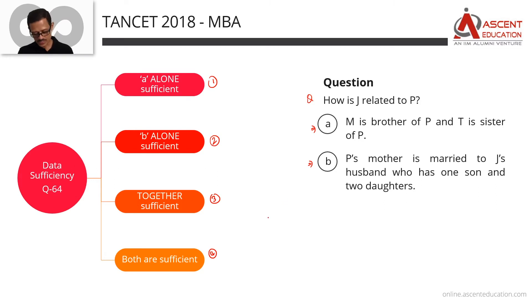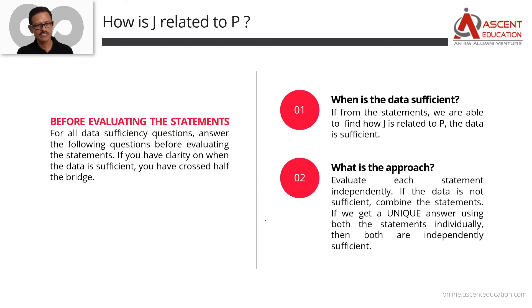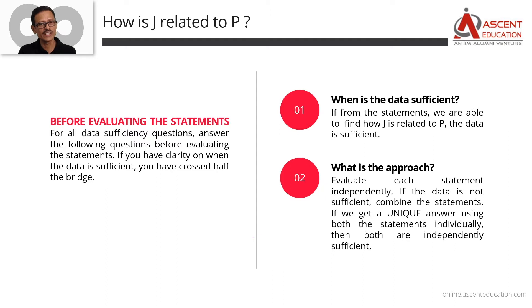Now, what's the question? That's a beauty — this question is very well-worded. The question asks: 'How is J related to P?' Notice the difference between this wording and asking: 'How are J and P related?'